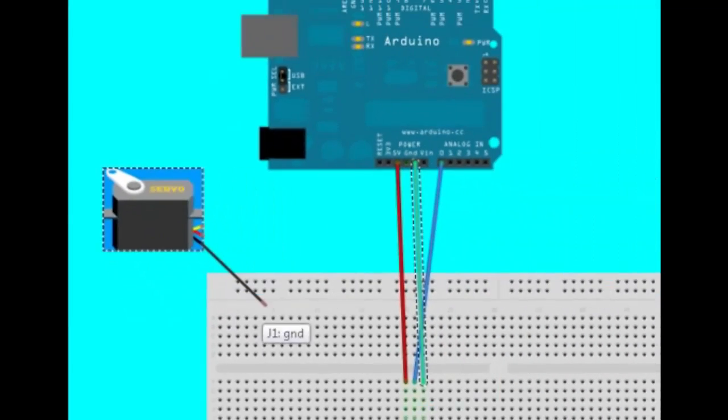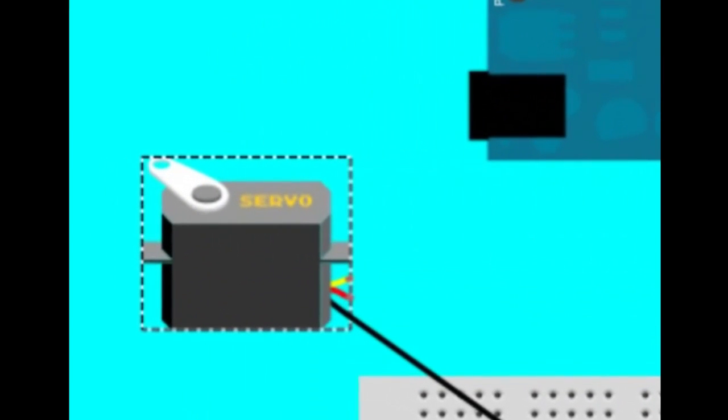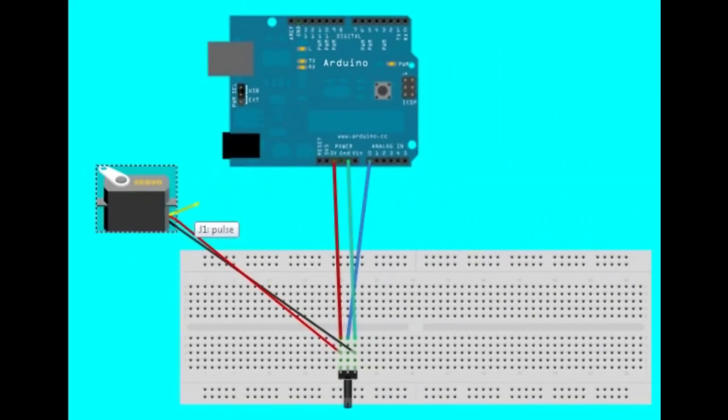Now grab your servo and let's juice it. The darkest wire, generally brown or black, should connect to the ground. You can just connect it to the same breadboard row as the ground wire for the potentiometer. The middle wire, generally red, connects to the 5V row. And the last wire connects to output pin 9 on the Arduino, so we can output the position data. Vunderbar.